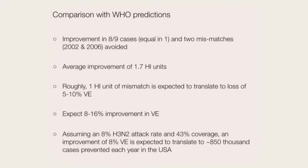Overall, we see an improvement in eight out of nine cases with this method, getting the same choice in one case. We'd avoid two mismatches — the things the WHO is really trying to avoid where there's more than a two-unit mismatch between vaccine strain and circulating strains. Some back-of-the-envelope calculations: the average improvement of the model is 1.7 HI units. From challenge studies and vaccine work, we think one unit of HI mismatch is about 5-10% vaccine efficacy, so we'd expect maybe 8-16% improvement in vaccine efficacy. Even a small improvement of 8% would mean hundreds of thousands of cases averted in the U.S. and many more worldwide. This is not to say the WHO choices are bad, but even eking out a little bit more VE could really improve things.